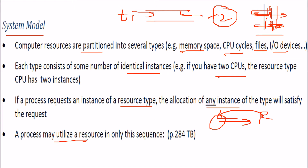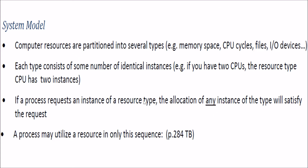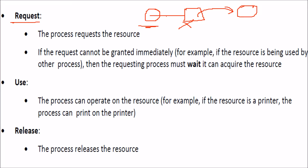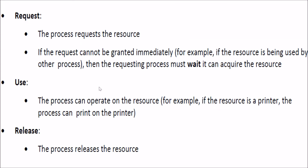A process may utilize a resource in only a certain sequence. First, it would request the resource. If the request cannot be granted immediately — for example, if the resource is being used by some other process — then the requesting process has to wait until the other process releases the resource. Then, when it gets hold of the resource, it can operate on it; for example, if the resource is a printer, the process can print. Once the work is done, it will release the resource.